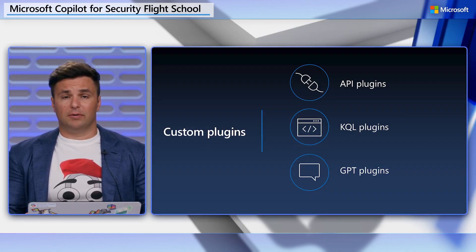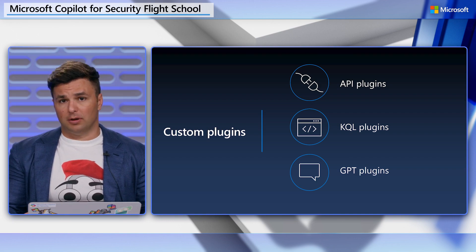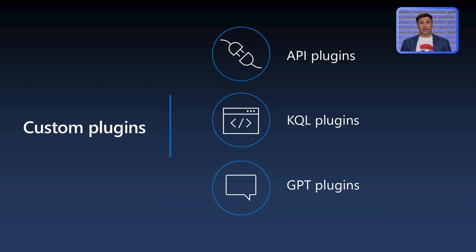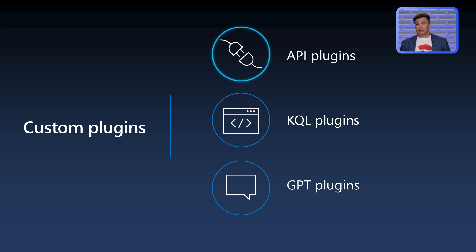Copilot's plugin architecture allows different types of plugins, and we'll address three: API, GPT, and KQL plugins. Each type has inherent advantages, and what's best suited for you depends on the workflow you intend Copilot to support. Most security workflows today are connected through an API, and this is likely the plugin type you'll use to connect your systems. API plugins in Copilot support custom endpoint URLs, multiple authentication types, and parameter passing to endpoints. This plugin type is best suited for external or non-Microsoft systems.